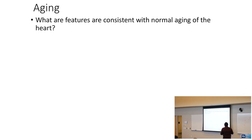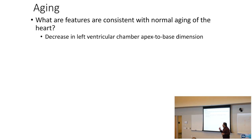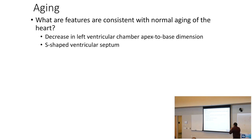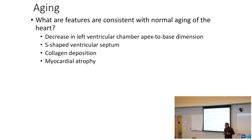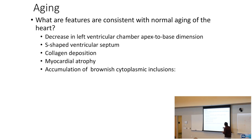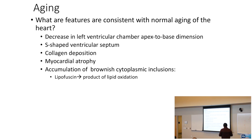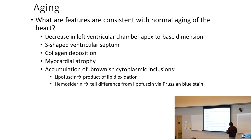Let's talk about aging. What are the features consistent with normal aging of the heart? Normal aging of the heart includes a decrease in left ventricular chamber apex-to-base dimension, more of an S-shaped ventricular septum, more collagen deposition, myocardial atrophy, and accumulation of brownish cytoplasmic inclusions as lipofuscin. Lipofuscin is a product of lipid oxidation. Hemosiderin is going to be an iron breakdown inclusion, and you tell the difference between lipofuscin and hemosiderin via Prussian blue stain, because hemosiderin lights up on the Prussian blue stain, which is an iron-specific stain.